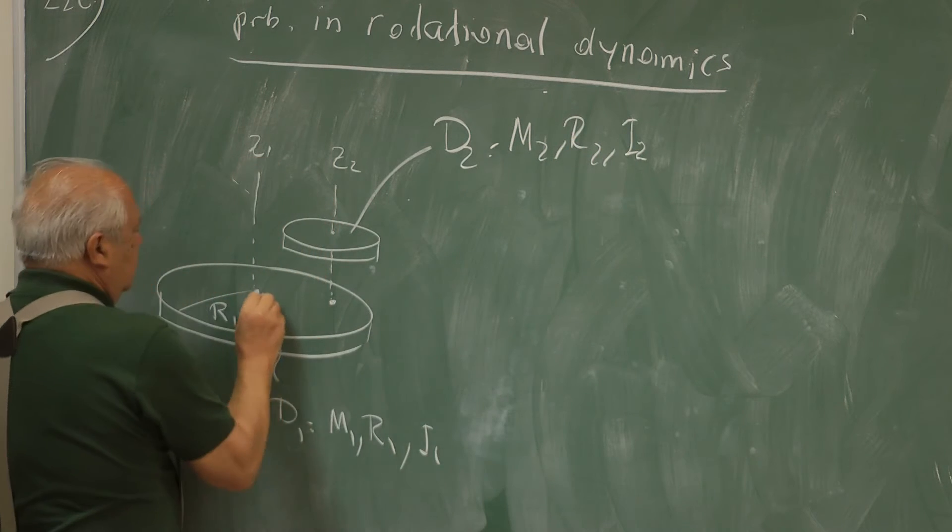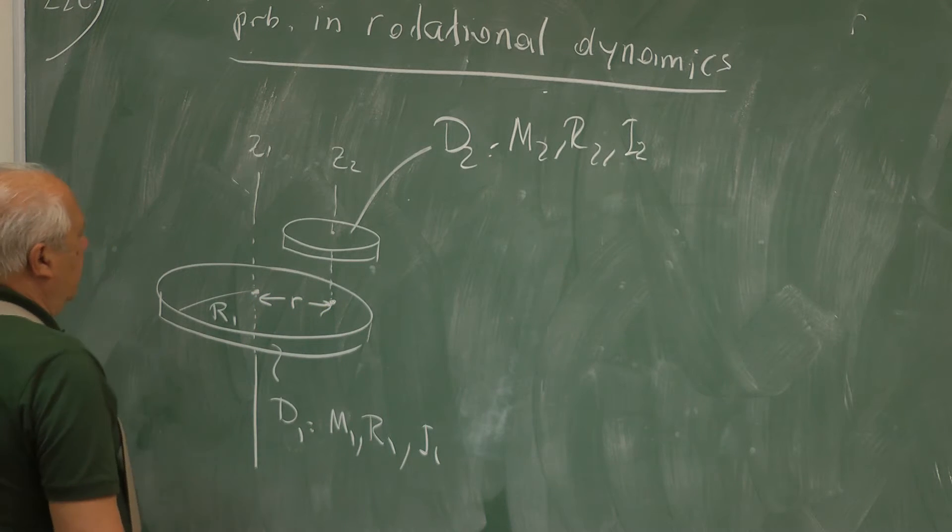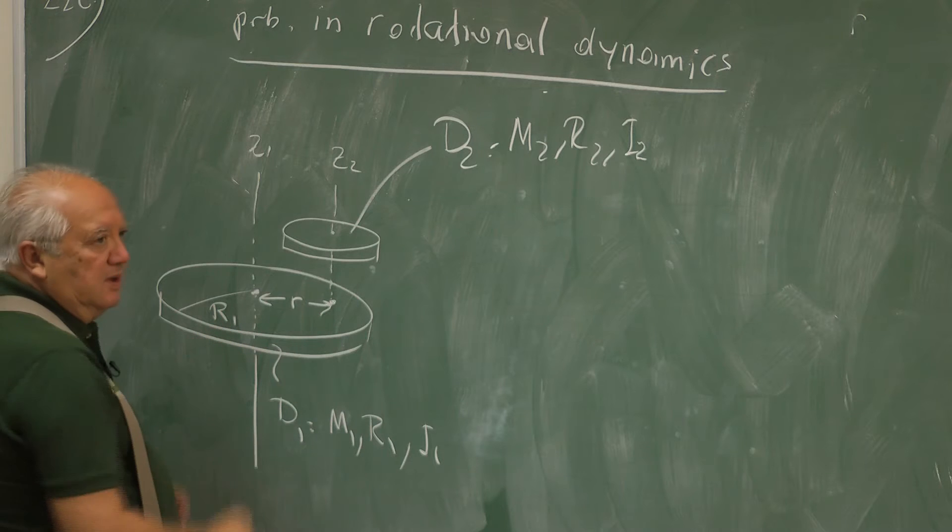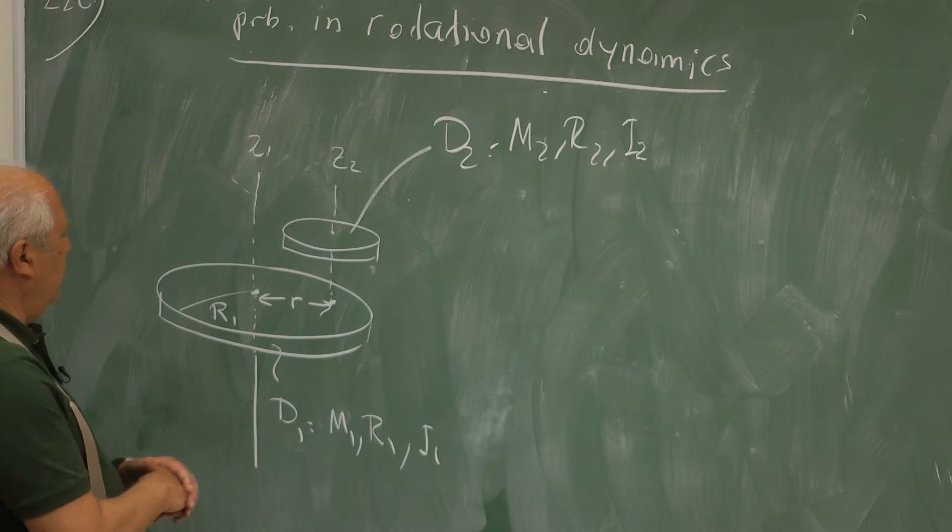And this distance is R. This is the distance between the axis Z1 and Z2. The problem is as follows.